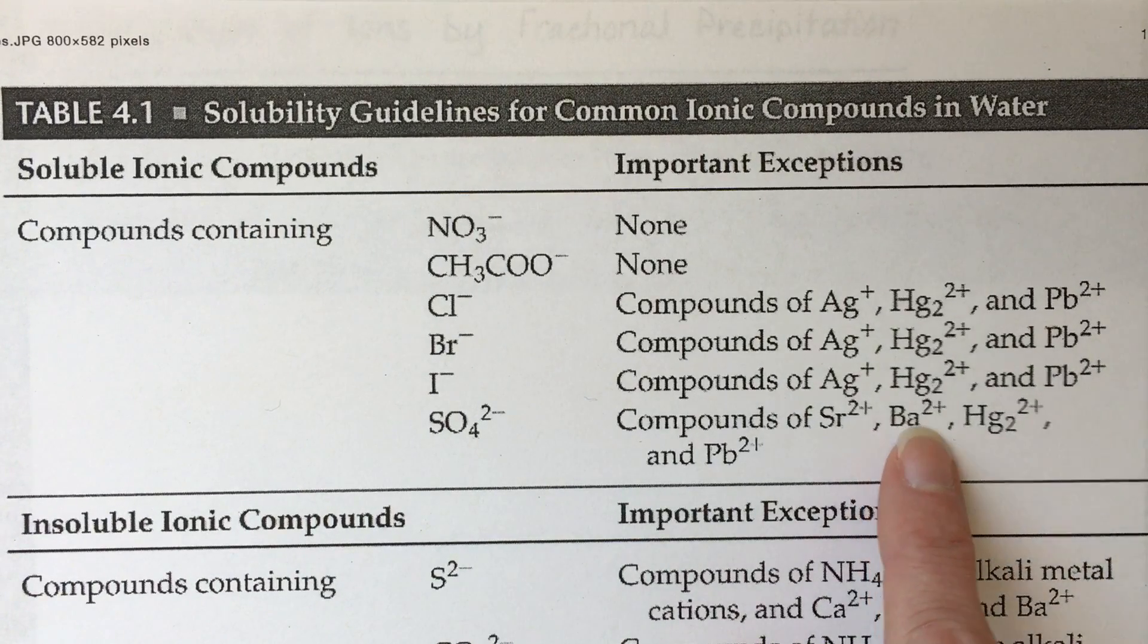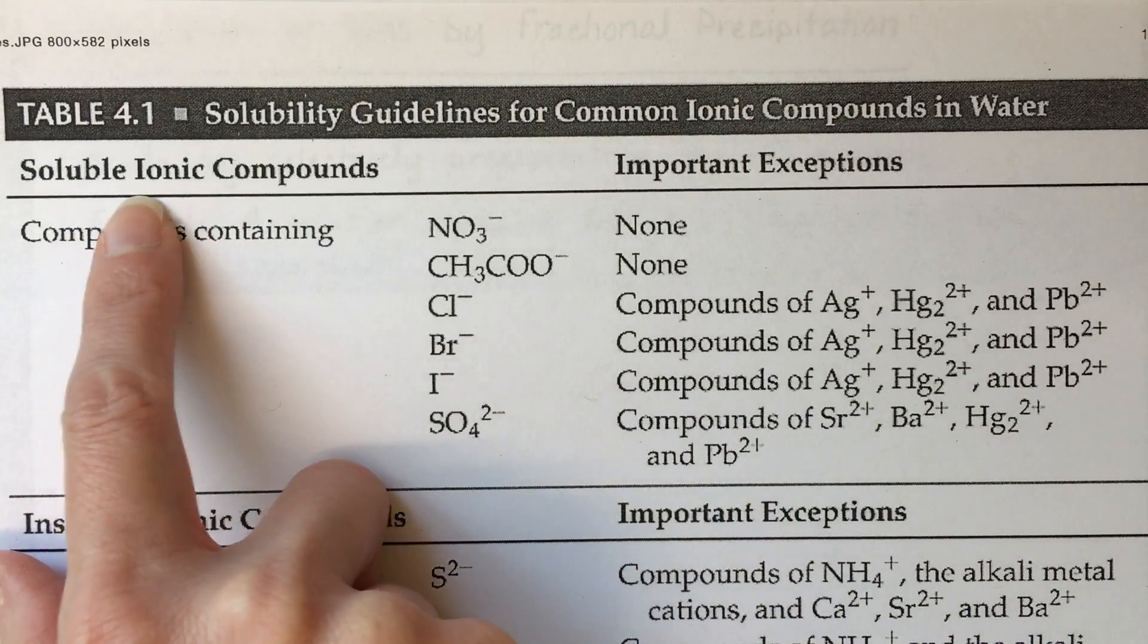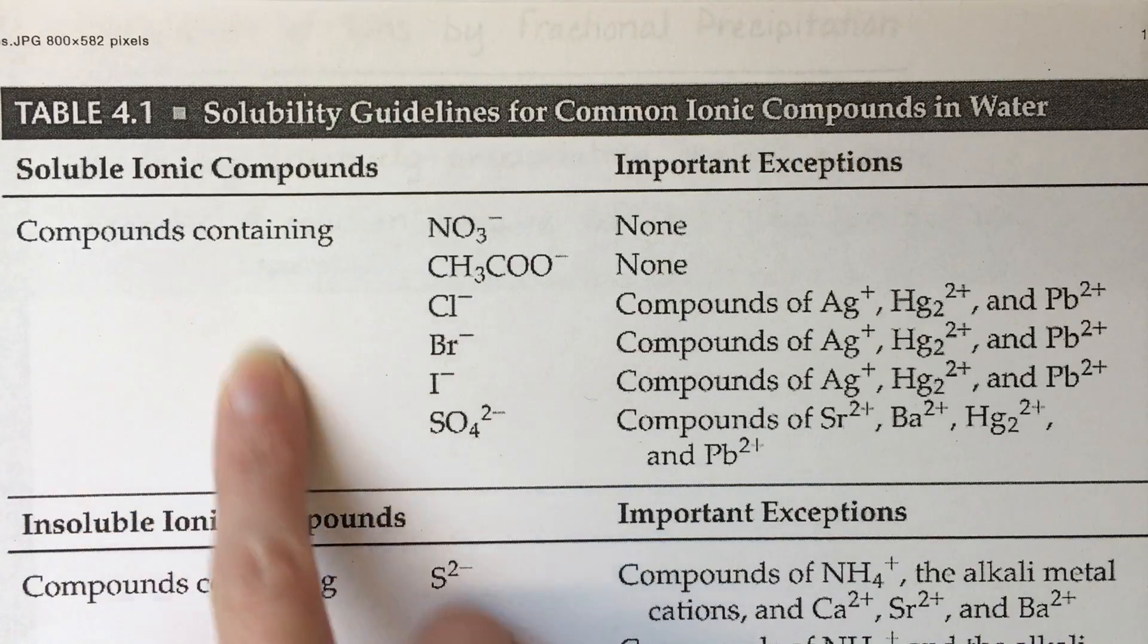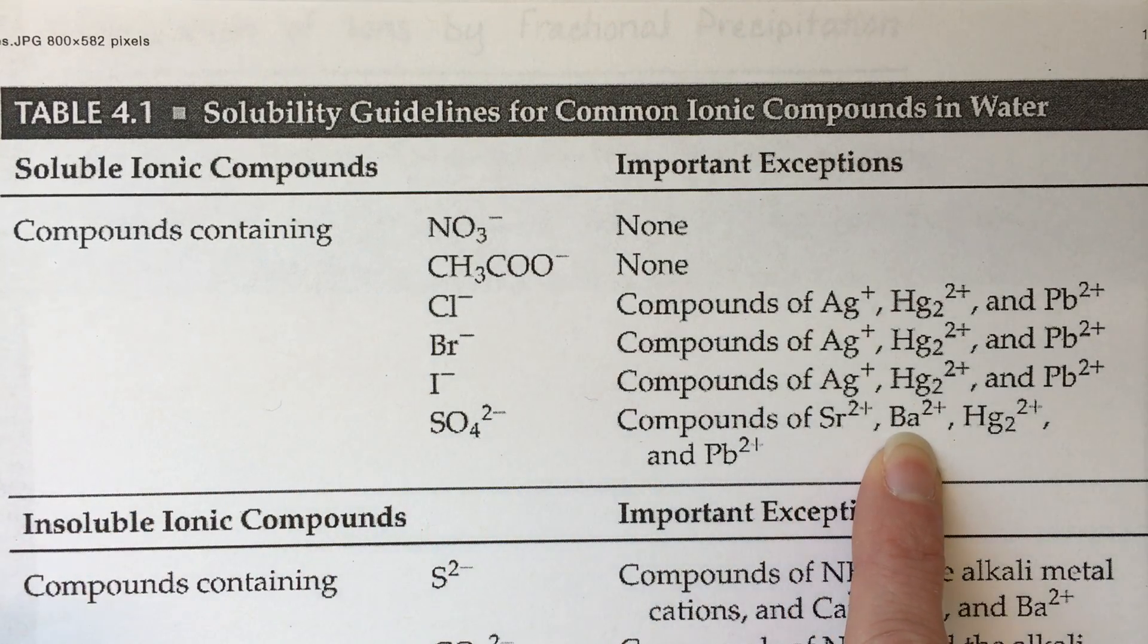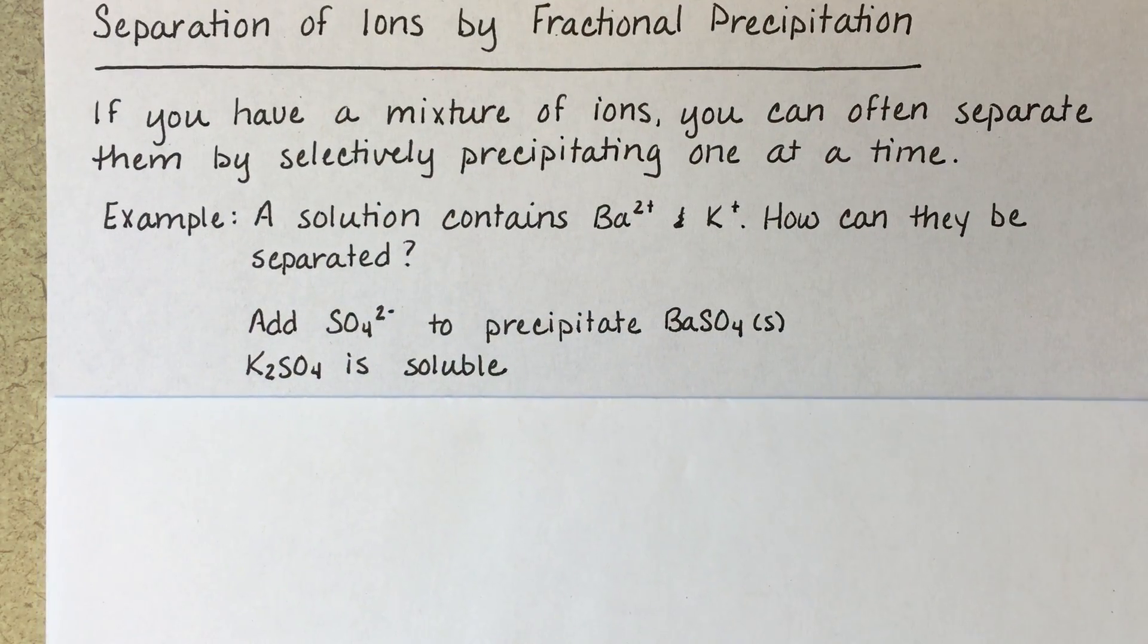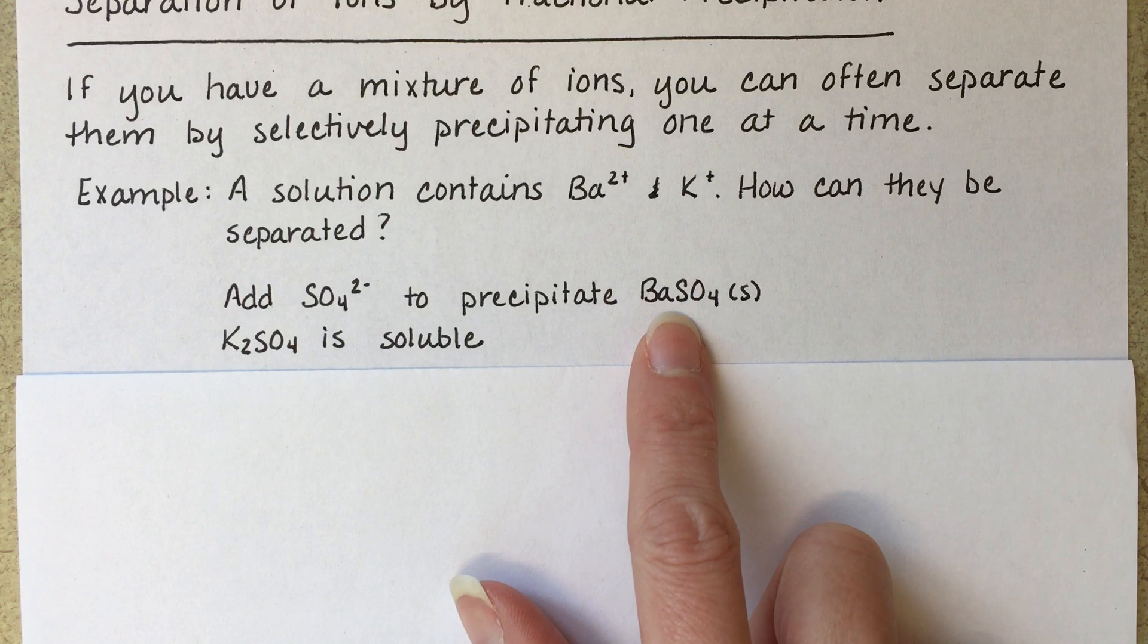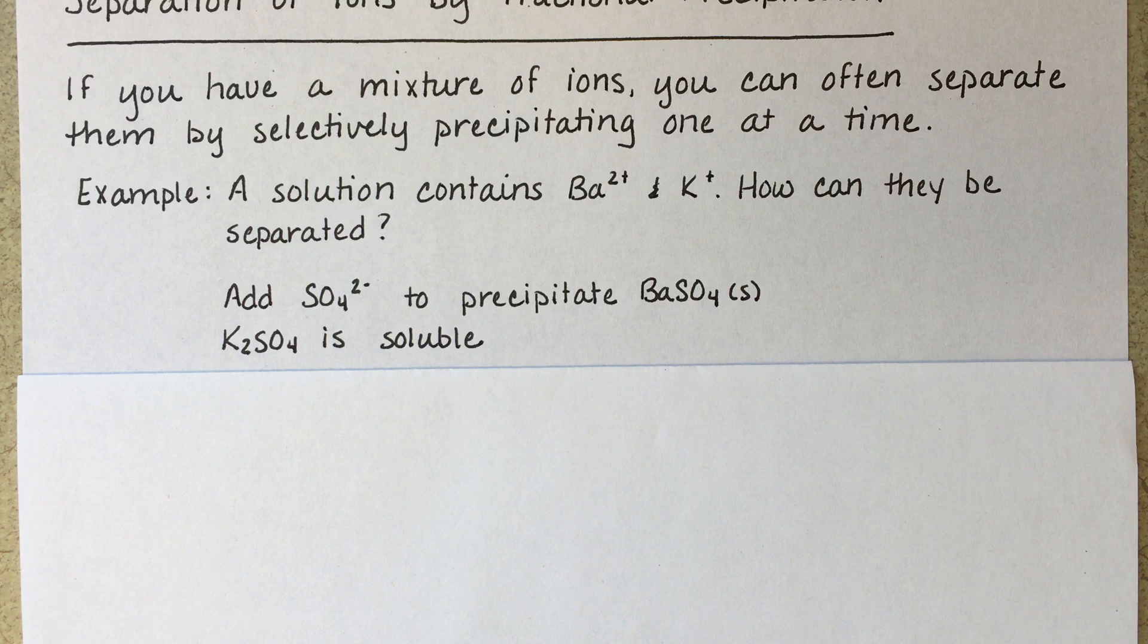Now right away, I can see barium, this is what we're working with. So I'm going to take a look at this solubility rule here. It says that soluble ionic compounds contain sulfate with the exception of barium sulfate. So that tells me that if I add sulfate to this solution, I will precipitate barium sulfate as a solid, but the K2SO4 will stay dissolved because it's soluble. That's perfect. That's all that we need.